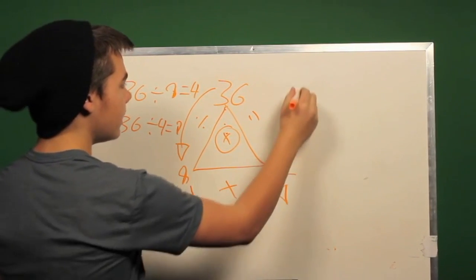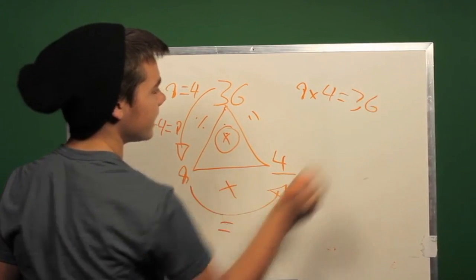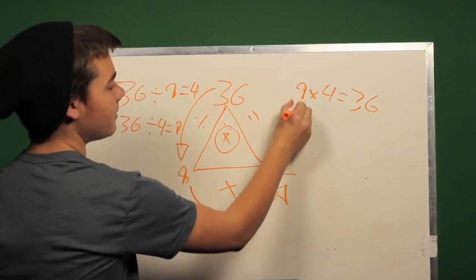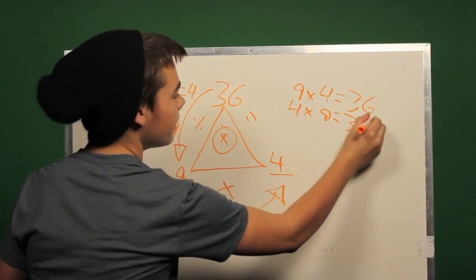And also, if we multiply 9 by 4, it equals 36. And if we multiply 4 by 9, that also equals 36.